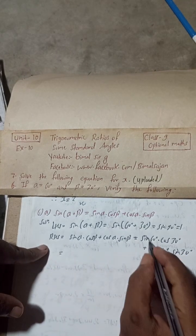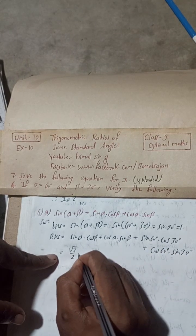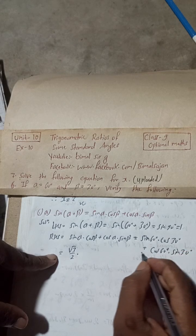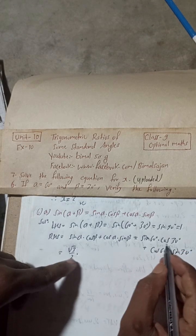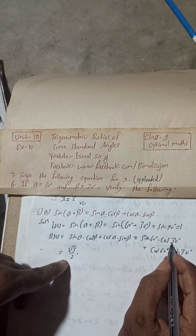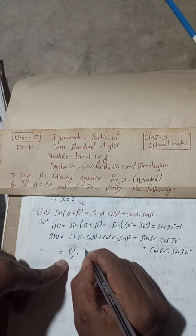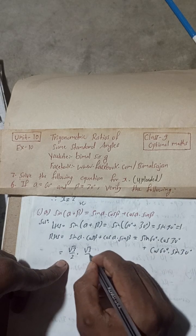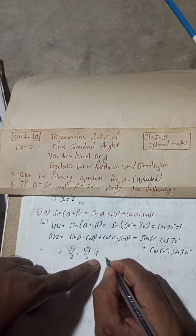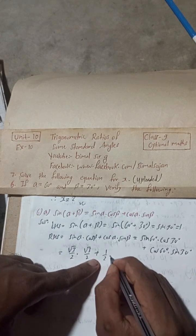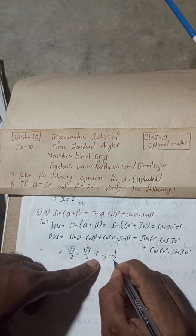So this is equal to: sin 60 value is root 3 by 2, into cos 30 value which is root 3 by 2, plus cos 60 which is equal to 1 by 2, into sin 30 which is also 1 by 2.